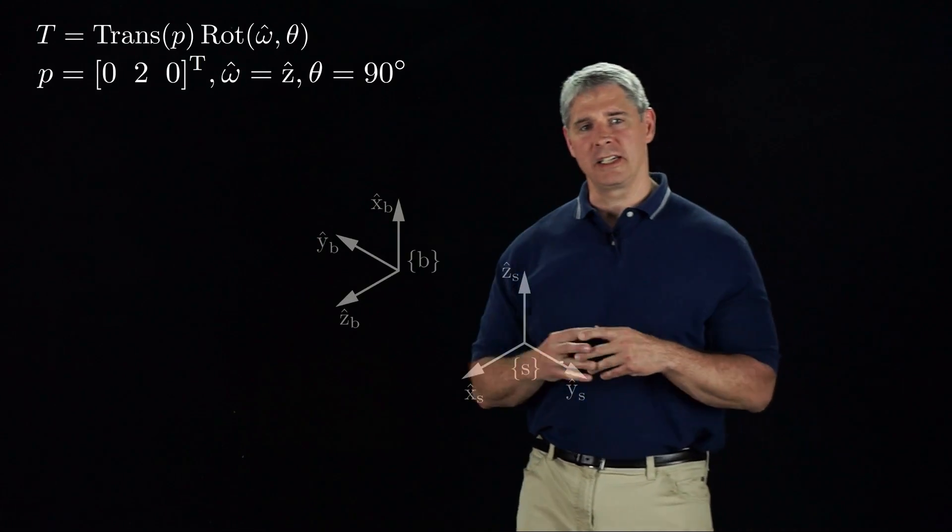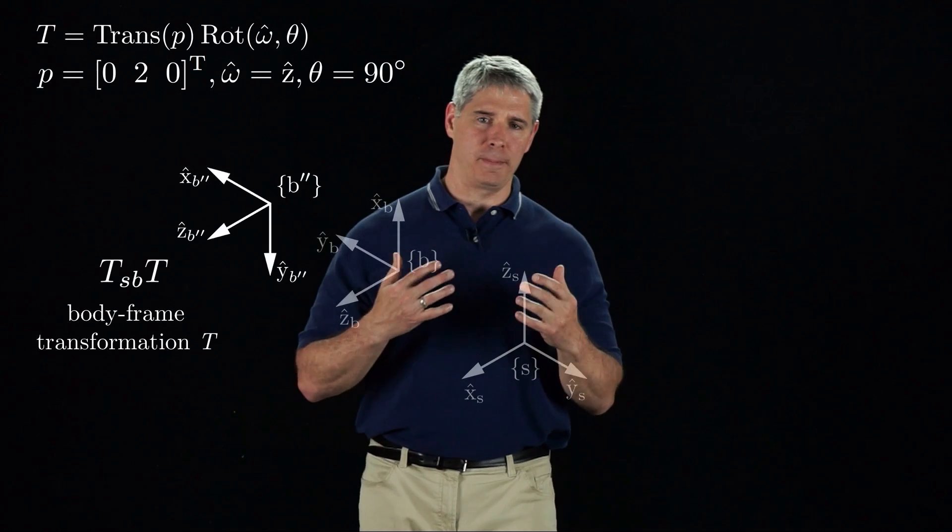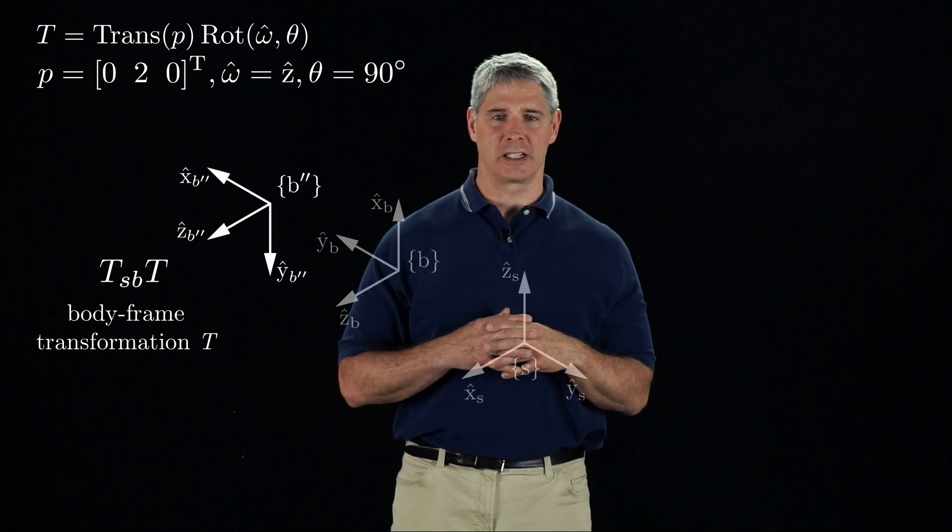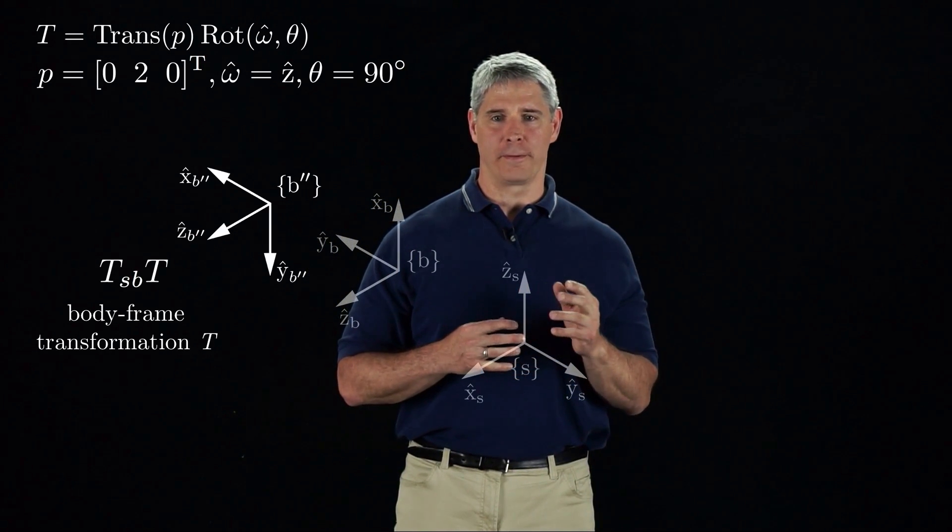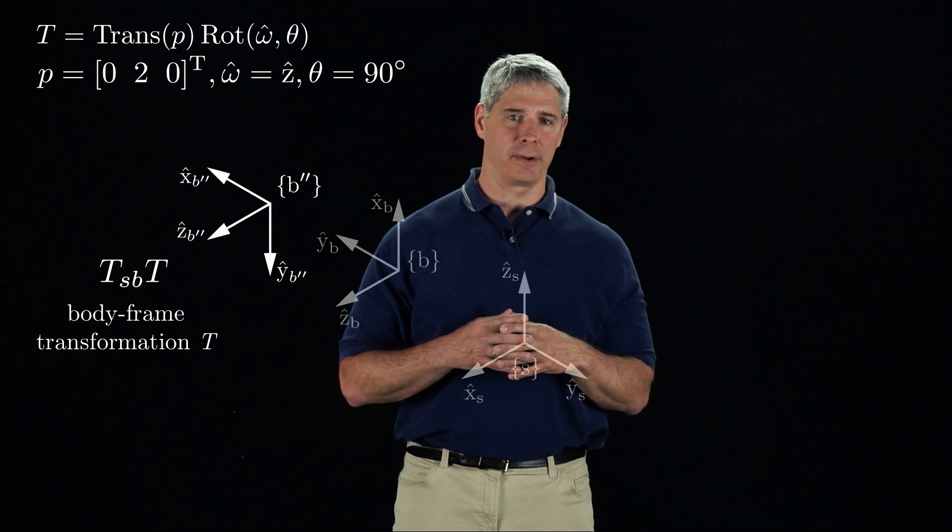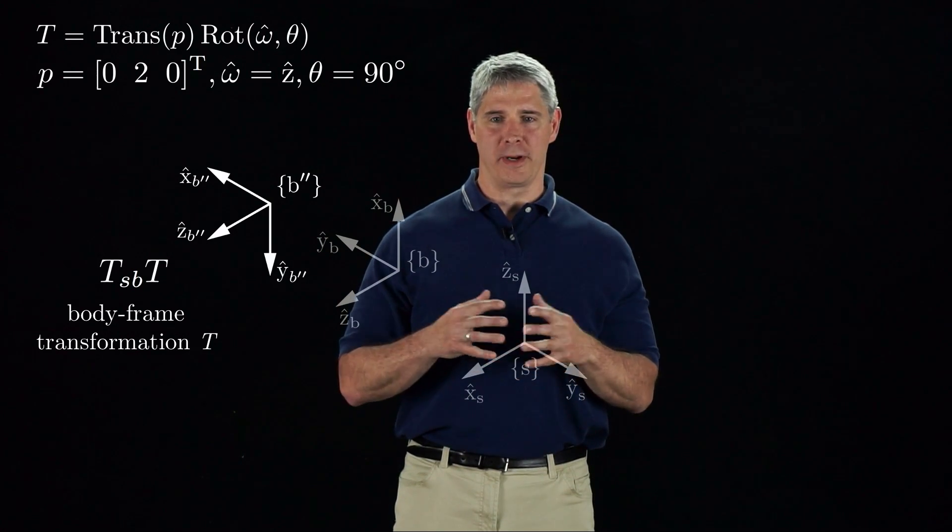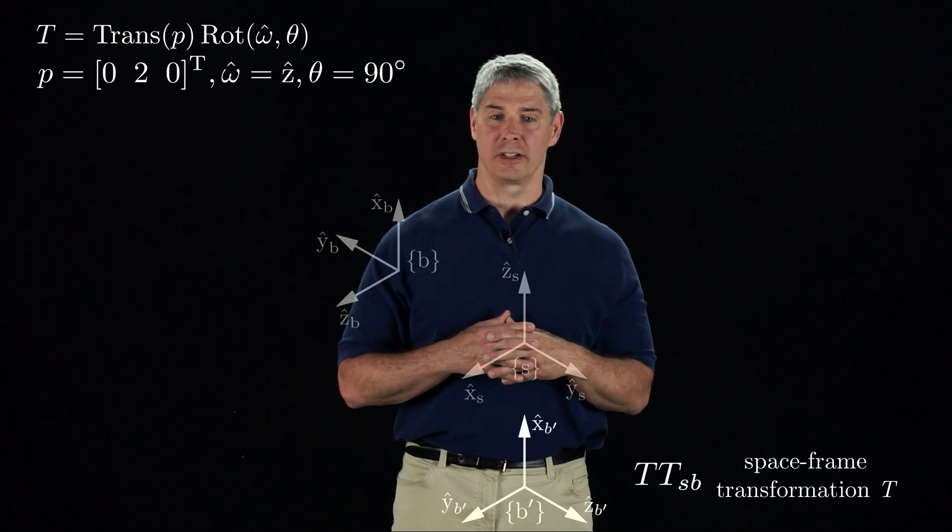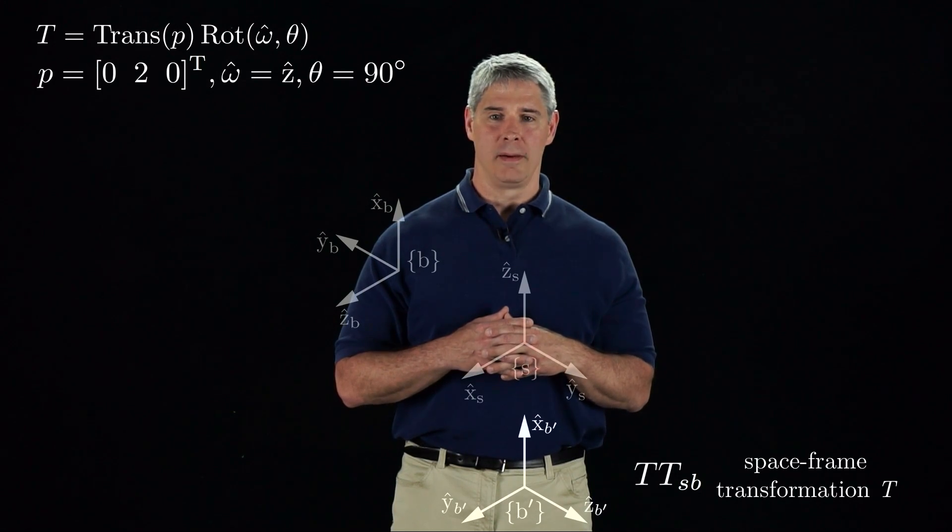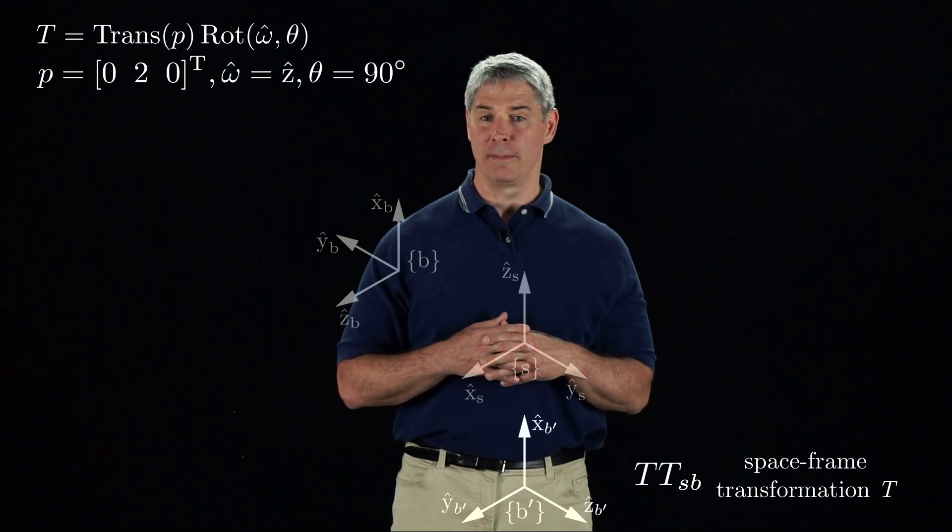In summary, if the transformation T is applied on the right, the vectors P and omega-hat are considered to be expressed in the body frame, moving the frame B to the new frame B-double-prime. If the transformation T is applied on the left, P and omega-hat are considered to be expressed in the space frame, moving the frame B to the new frame B-prime.